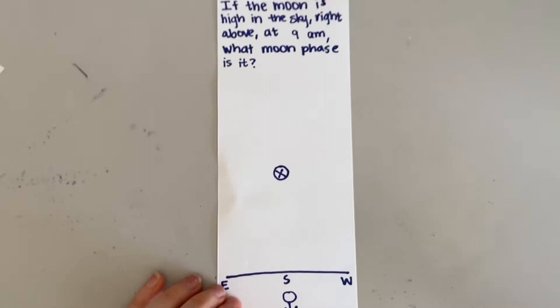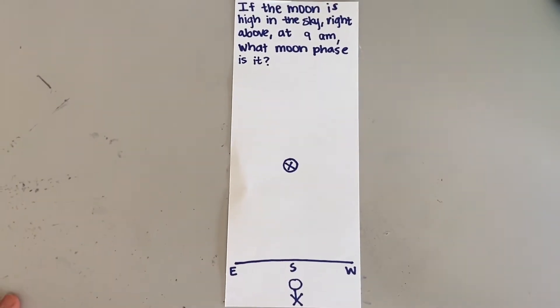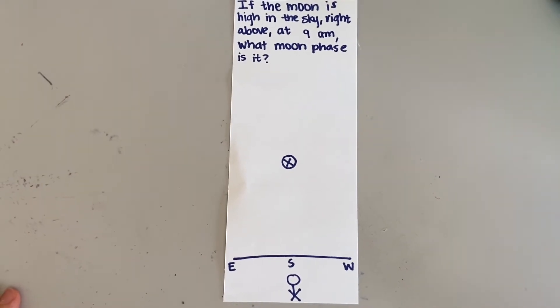So let's do some practice. This problem says, if the moon is high in the sky right above us at 9 a.m., what moon phase should it be in?